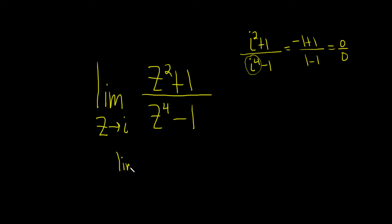This is the limit as z approaches i. In the numerator we have z squared plus 1, and in the denominator we can factor it as z squared minus 1 times z squared plus 1.